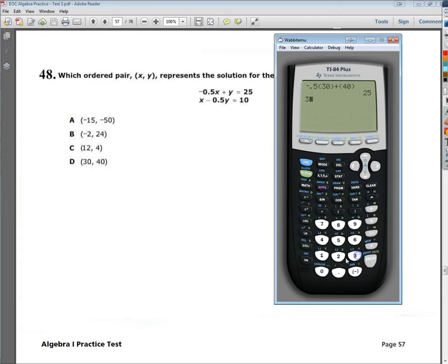Same thing on the other side. My x is 30 minus 0.5 times my y, which is 40, and it gives me 10. Now if I tried one of the other ones, let's just do the letter C with the second one. My x value here would be 12 minus 0.5, and my y value would be 4. So it should equal 10. And it does equal 10. So let's make sure the other one works. Negative 0.5 times 12 plus my y value of 4 equals negative 2. But it's supposed to equal 25, right? So that can't be the right answer. So it has to work for both.